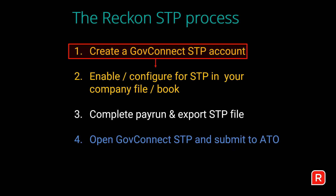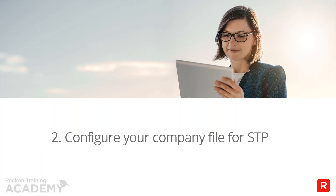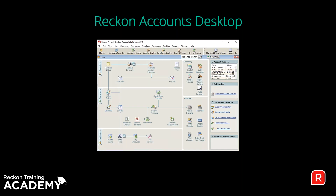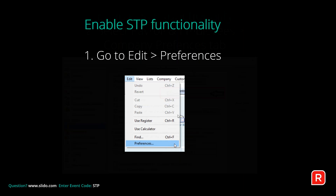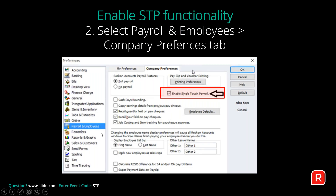Now that the GovConnect STP account is created, the next step is enabling and configuring STP in your company file. Within Reckon Accounts Desktop, go to Edit, then Preferences, select Payroll and Employees, go to the Company Preferences tab, and enable the Single Touch Payroll functionality.